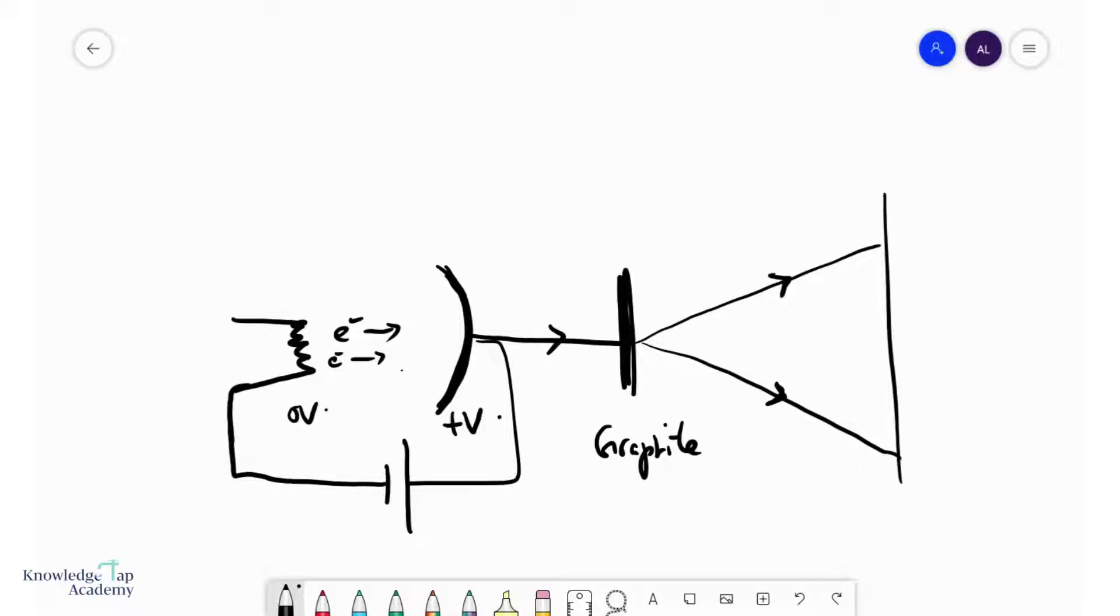To prove that particles can indeed behave like waves, a very famous experiment was conducted called the electron diffraction experiment. And this is exactly what it sounds like. It is showing that a particle like electrons can diffract, exhibit wave-like properties.